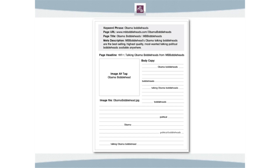This page here shows all the areas where keywords are actually effective on a website. At the very top you've got a keyword — in this case, Obama bobbleheads — the phrase you're targeting. On the page URL, the URL structure includes those words. The page title includes those words as well, as does the meta description, the page headline, the body copy, and the alt tag used on the image — all kinds of different areas where your keywords are used within a page.